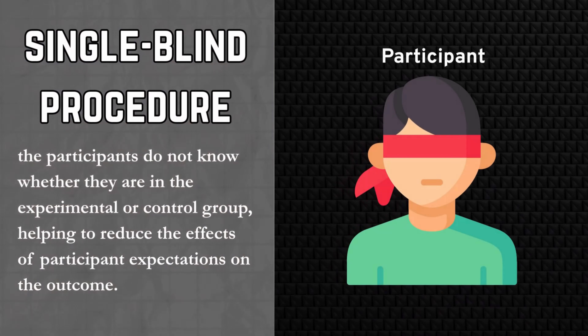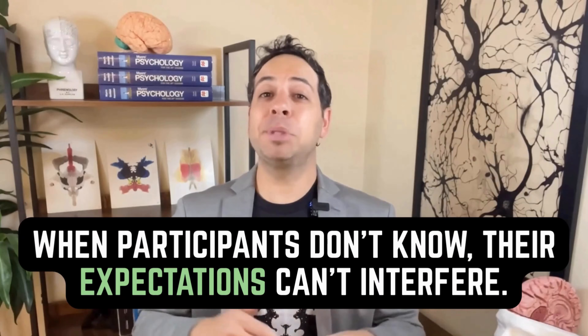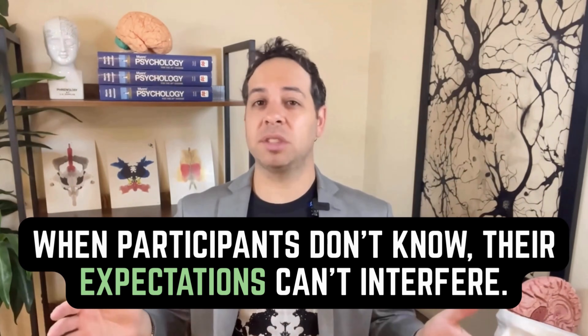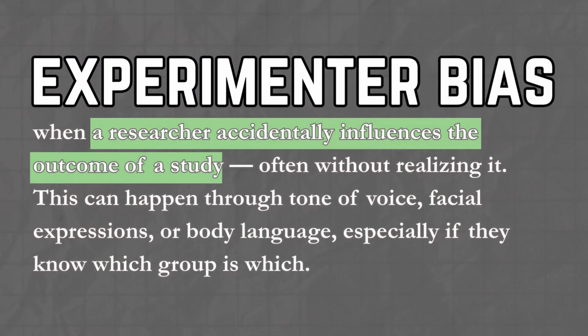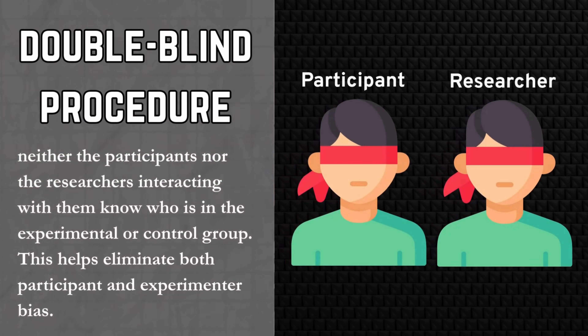To control for confounding variables, psychologists use a bunch of strategies. One of the most powerful is blinding. In a single blind study, participants don't know whether they're getting the real treatment or the placebo — this helps prevent their expectations from influencing the results. But even researchers can unintentionally influence research by knowing who's in which group. That's called experimental bias. To control for that, we use a double blind procedure, where neither the participant nor the researcher knows who's getting the real treatment — no winks, nudges, or suspicious smiles.